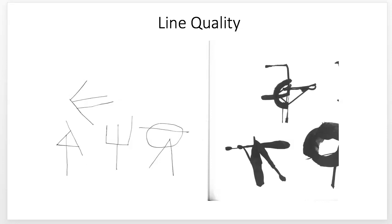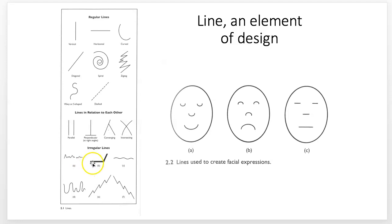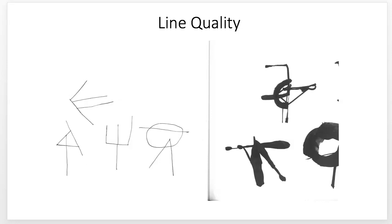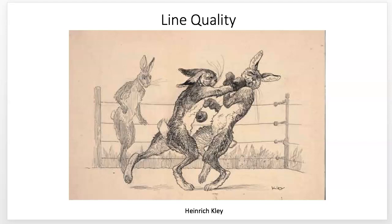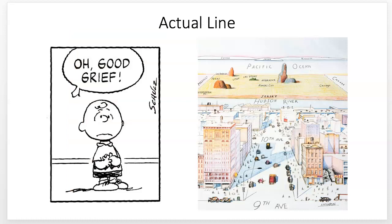Let's talk about line quality — the medium is a part of that as well. This is brush with ink, and this is an ink pen or nib. Same medium, but the way it's applied changes the quality a lot. These terms could also be considered line quality terms: regular, wavy, etc. This printmaking piece has a quality from the etching. The lightness and darkness of lines is also quality — it makes things come forward or go back into space.